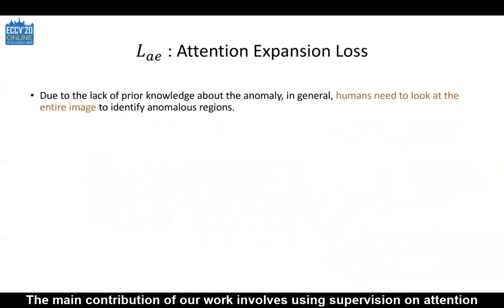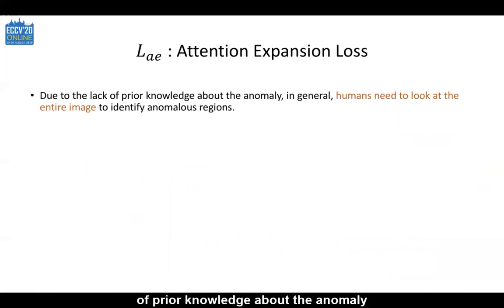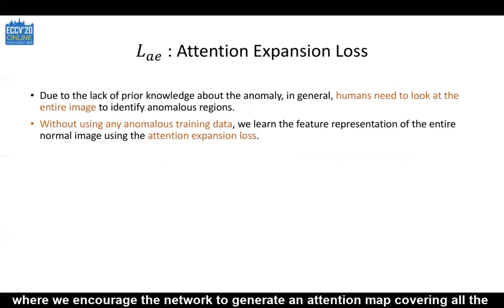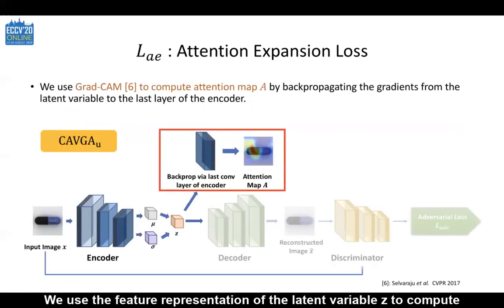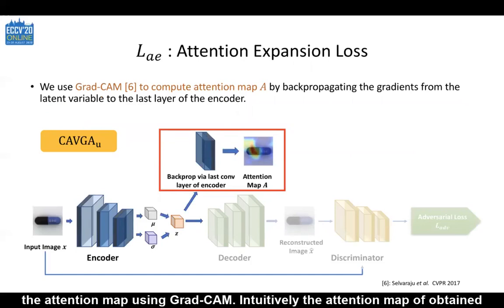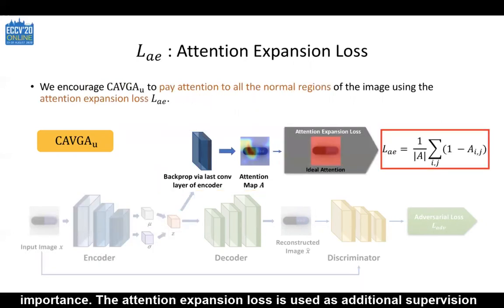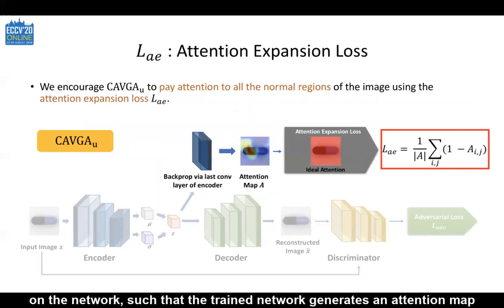We now discuss CAVGA in the unsupervised setting. The main contribution of our work involves using supervision on attention maps to spatially localize the anomaly in the image. Given the lack of prior knowledge about the anomaly, in general, humans need to look at the entire image to identify anomalous regions. We use this notion to learn the feature representation of the entire normal image by proposing an attention expansion loss, where we encourage the network to generate an attention map covering all the normal regions. We use the feature representation of the latent variable Z to compute the attention map using GradCam. The attention map obtained from the feature map focuses on the regions of the image based on the activations of neurons and their respective importance. The attention expansion loss is used as additional supervision on the network, such that the trained network generates an attention map that covers all the normal regions in the image.